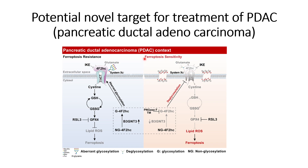When they introduced a mutated 4F2HC, the cells were unable to restore resistance and became ferroptosis-sensitive again, undergoing ferroptosis, that is, programmed cell death.